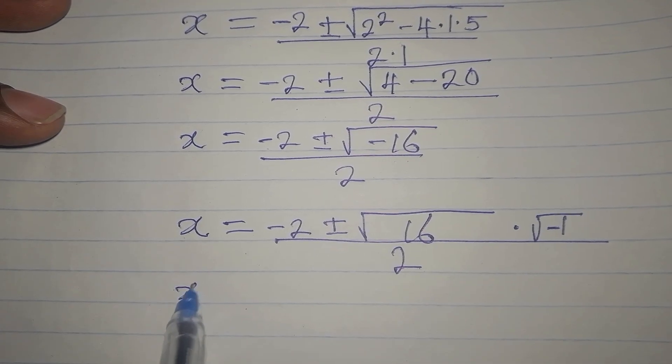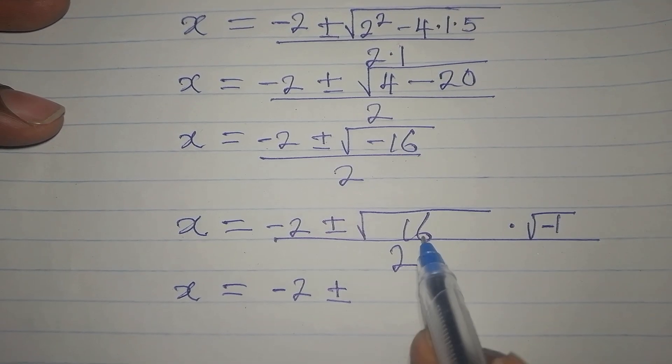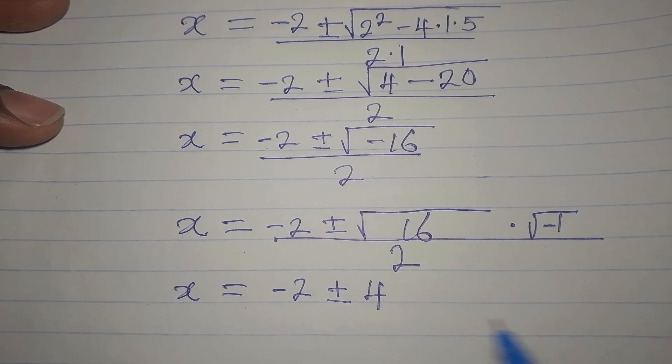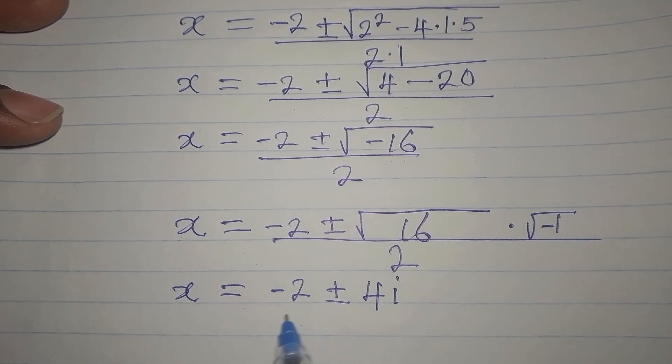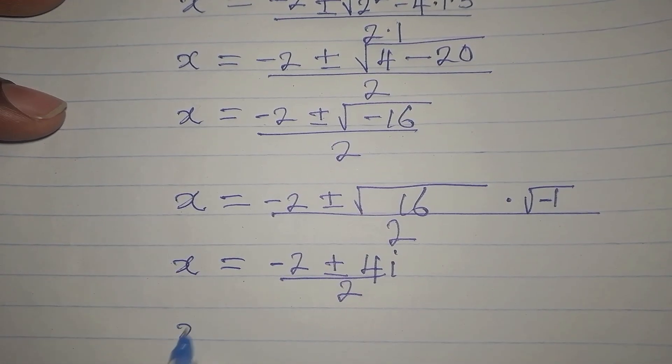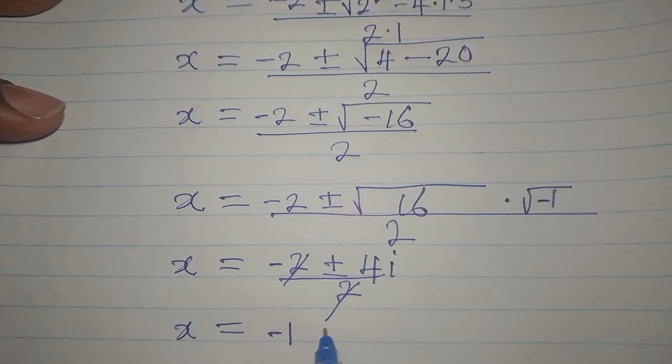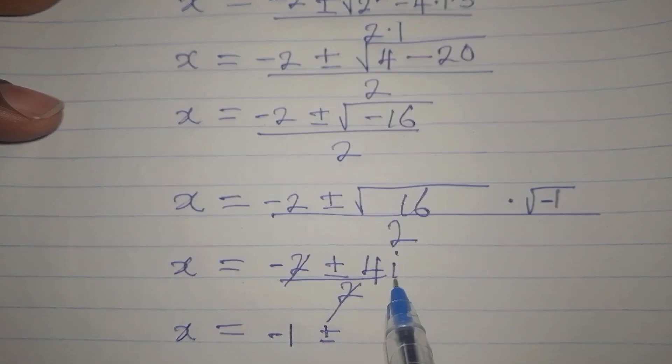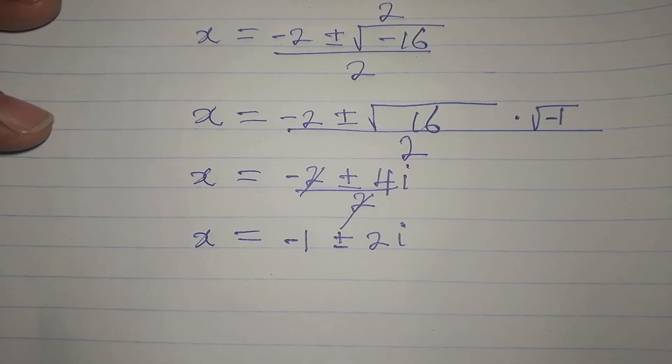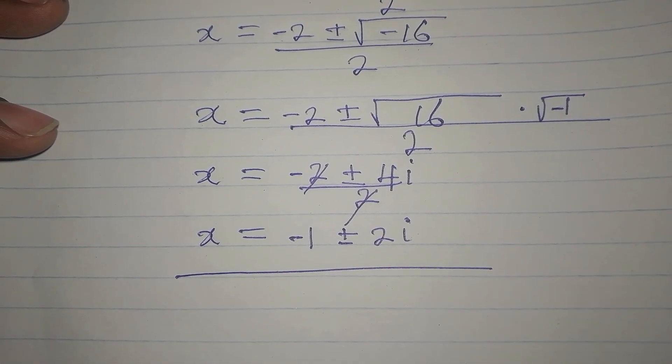Our x will be -2 ± 4i / 2, since √16 = 4 and √(-1) = i. So x = -1 ± 2i. Let's bring the three solutions together.